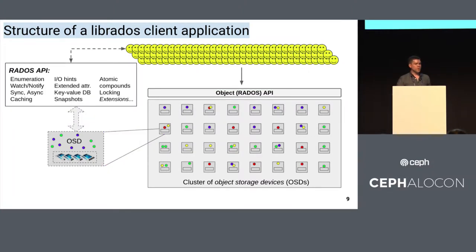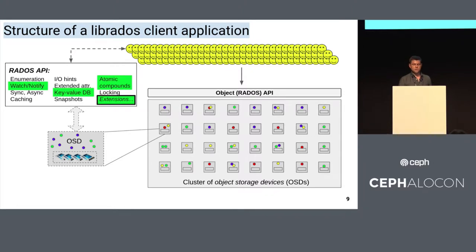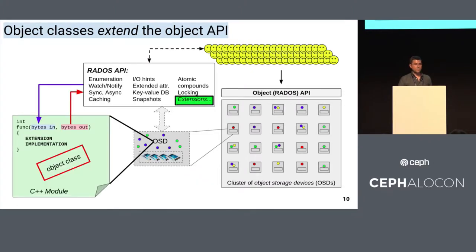RADOS contains a very rich set of APIs. You can store structured key-value data, get notifications for when objects change, and combine different operations that Ceph will execute atomically on your behalf. But if all of these things don't get you what you need for your application, you can extend this set of interfaces. What we mean by extensions is that you're writing code, compiling it into an object, and inserting that into the OSDs dynamically. This technology is referred to as object classes.